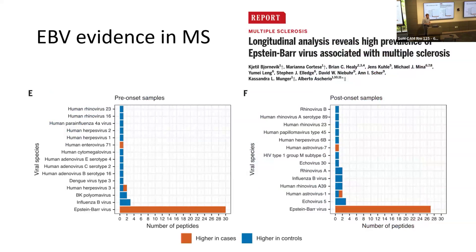The evidence for EBV triggering MS has been controversial for a long time. But back in 2022, two big articles came out — one in Science, one in Nature — and those have been discussed at Grand Rounds in the past. One article showed epidemiologic data from military recruits, demonstrating that seroconversion to EBV carried a much higher risk of developing MS. They also ran serological samples on peptide arrays of all known viruses infecting humans, and by far the greatest reactivity in people who developed MS was to EBV-related peptides — not true for any other virus.